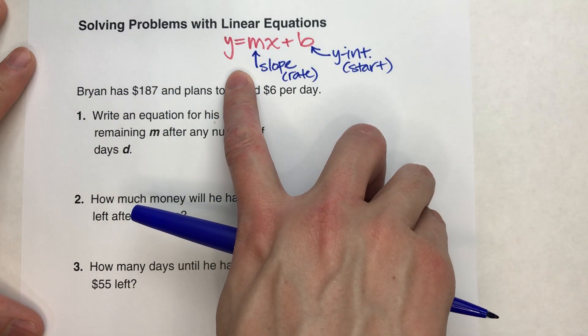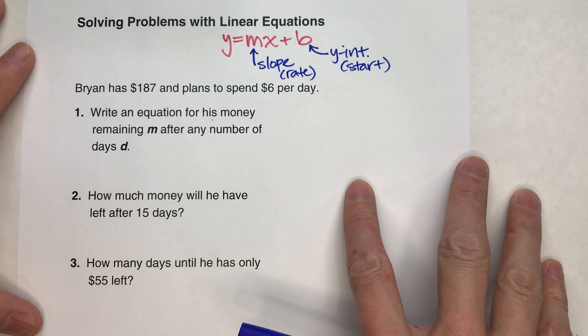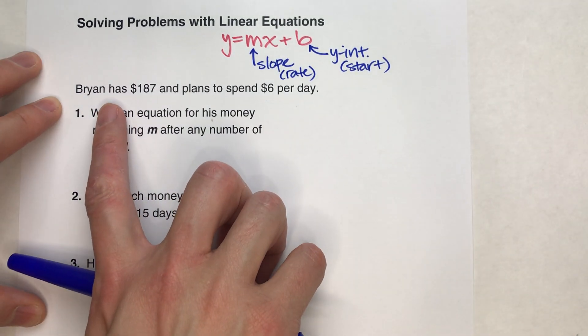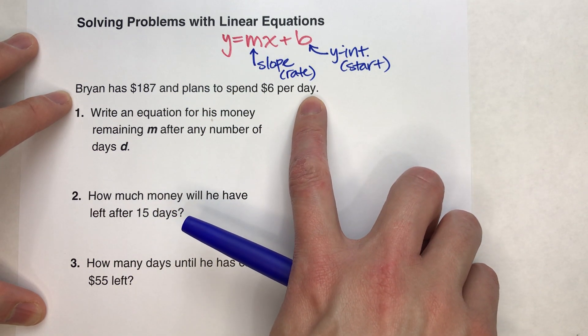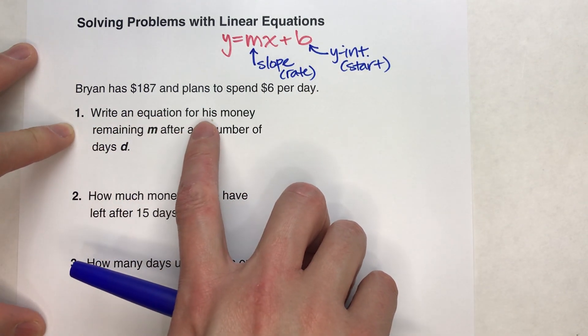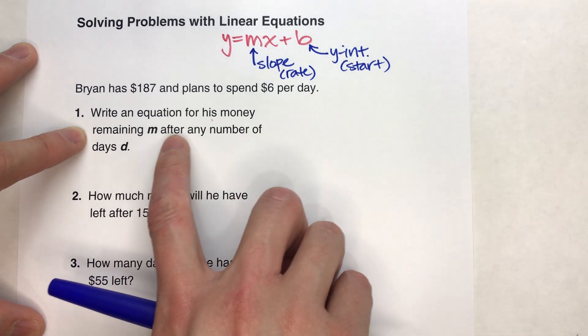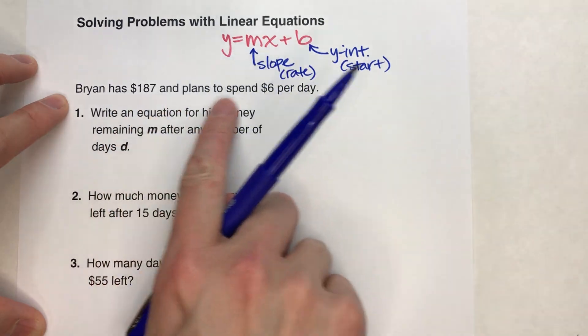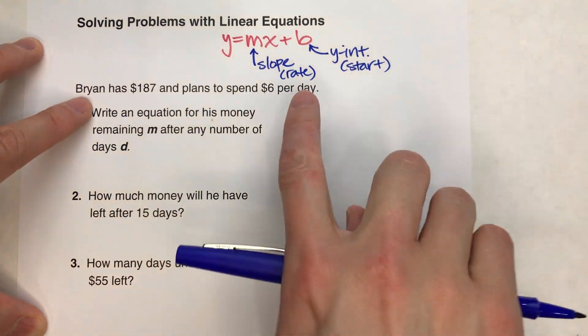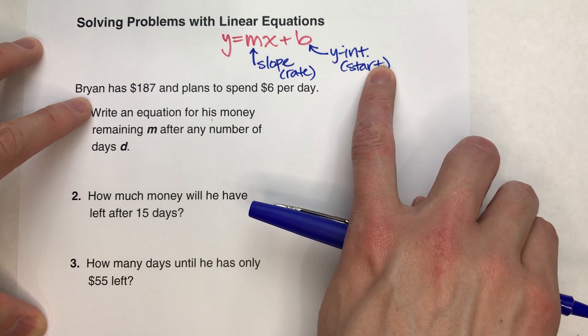And the best way to explain that is to go through an example. So let's do that. First thing I always do when I see these story problems is try to figure out which one's my rate and which one's my starting amount.